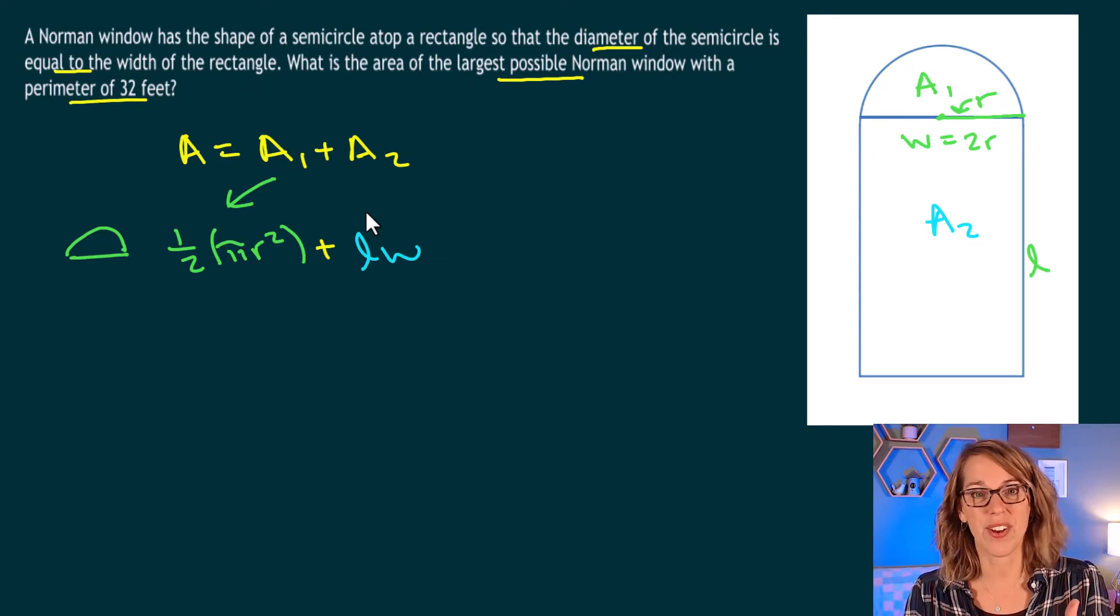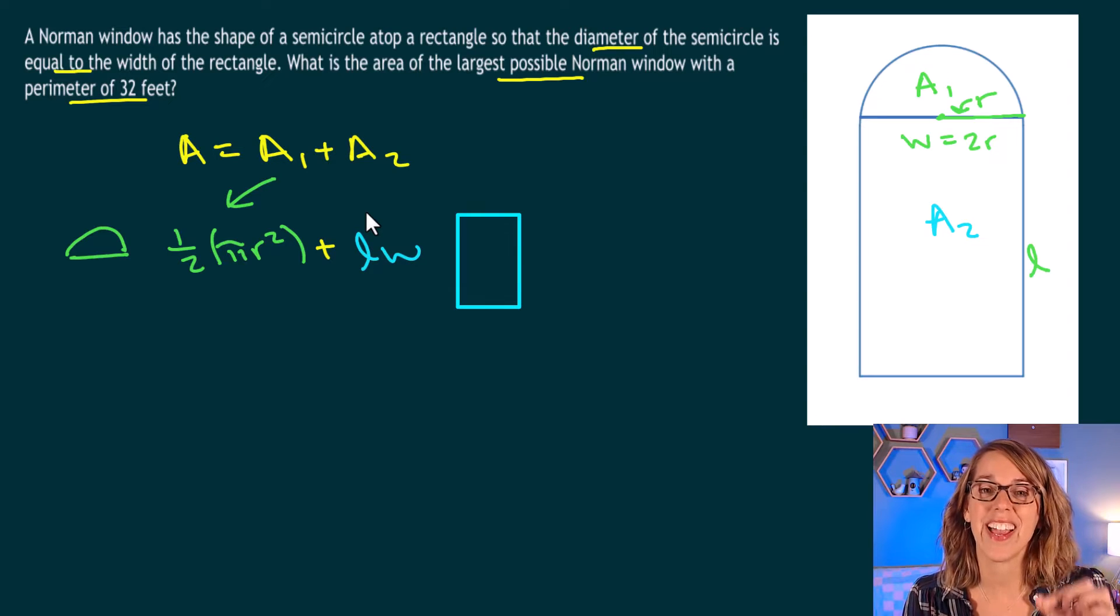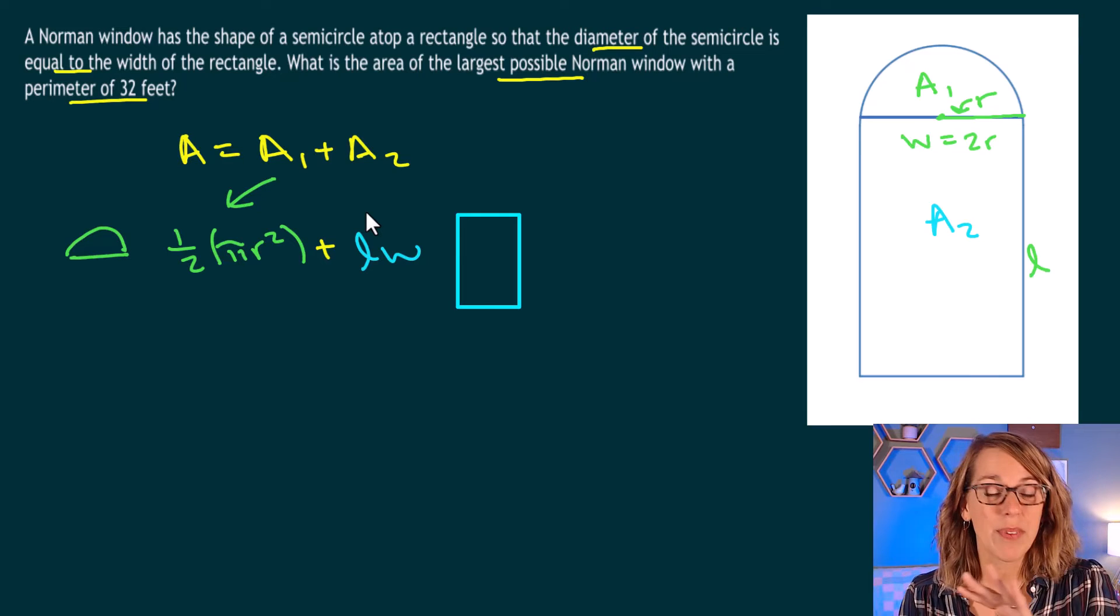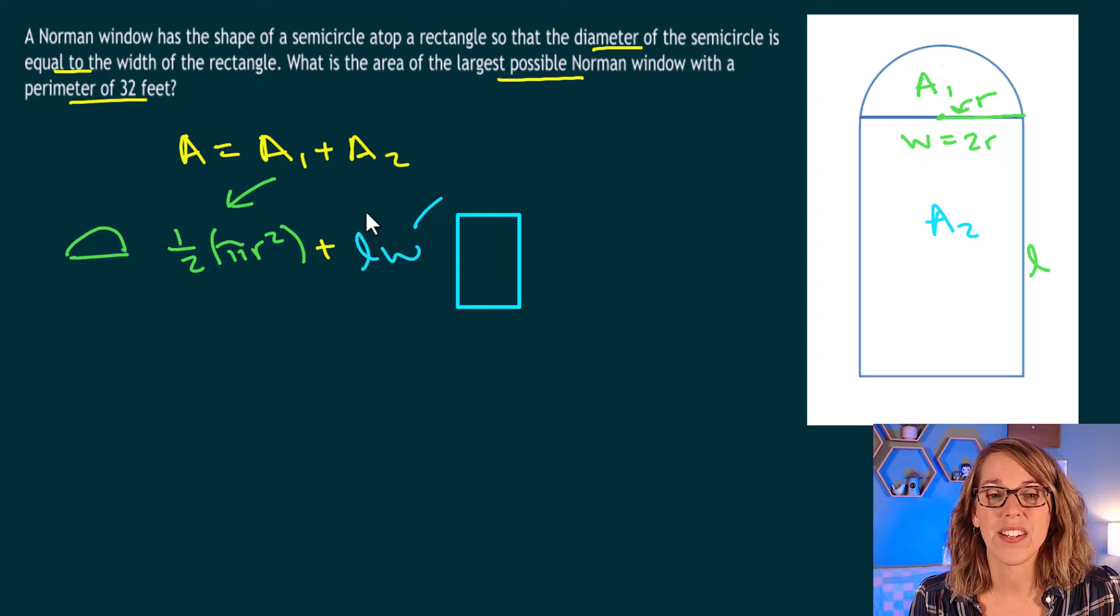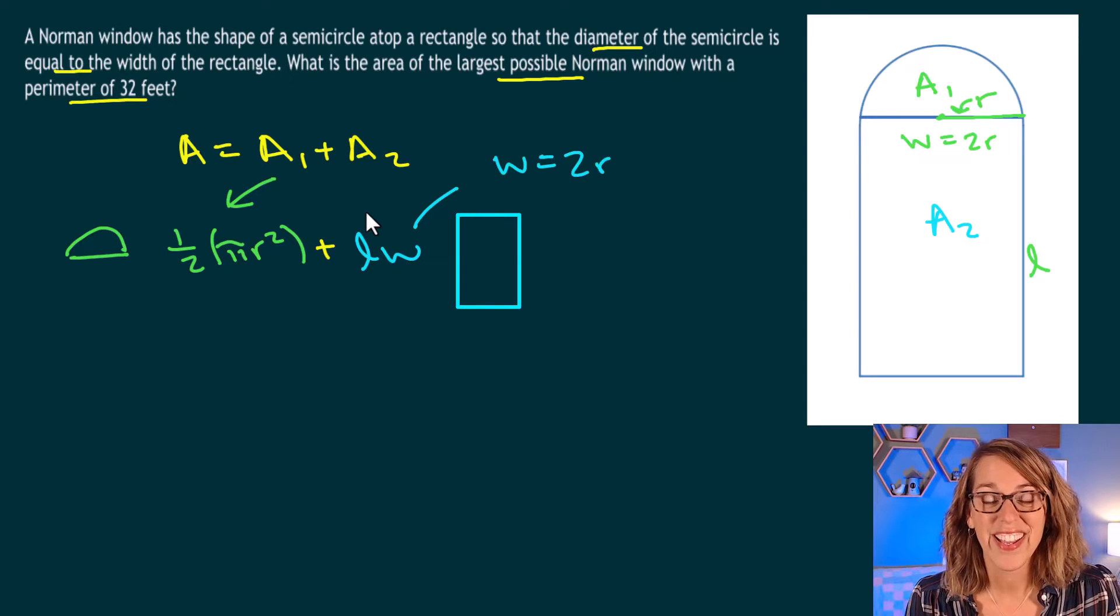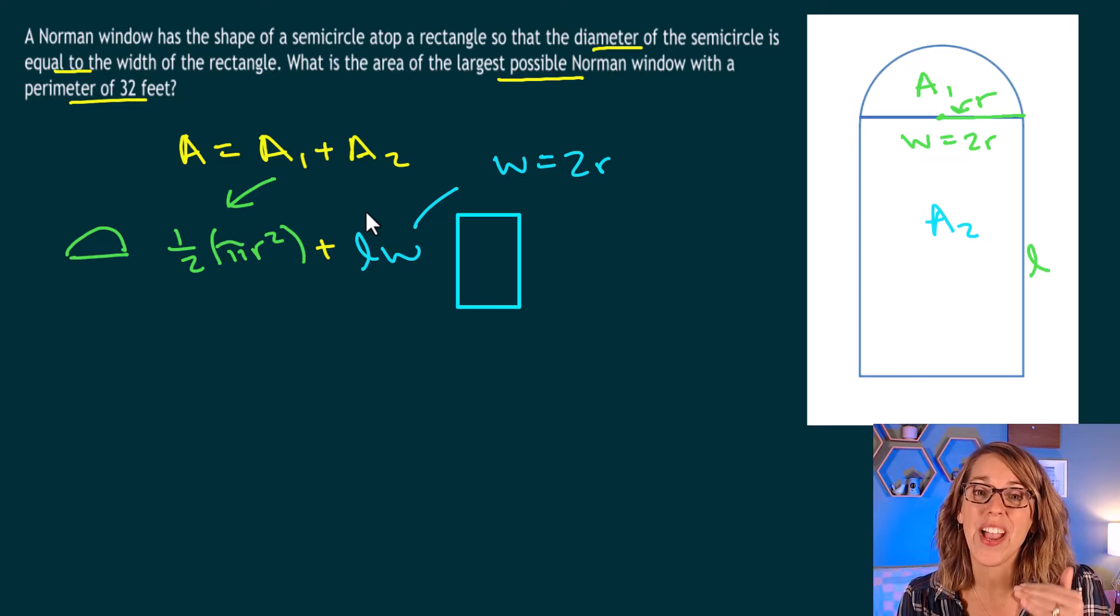Now I've got way too many variables in here. I've got an r, an l, and a w, and I just want a single variable. I can put everything here in terms of r.